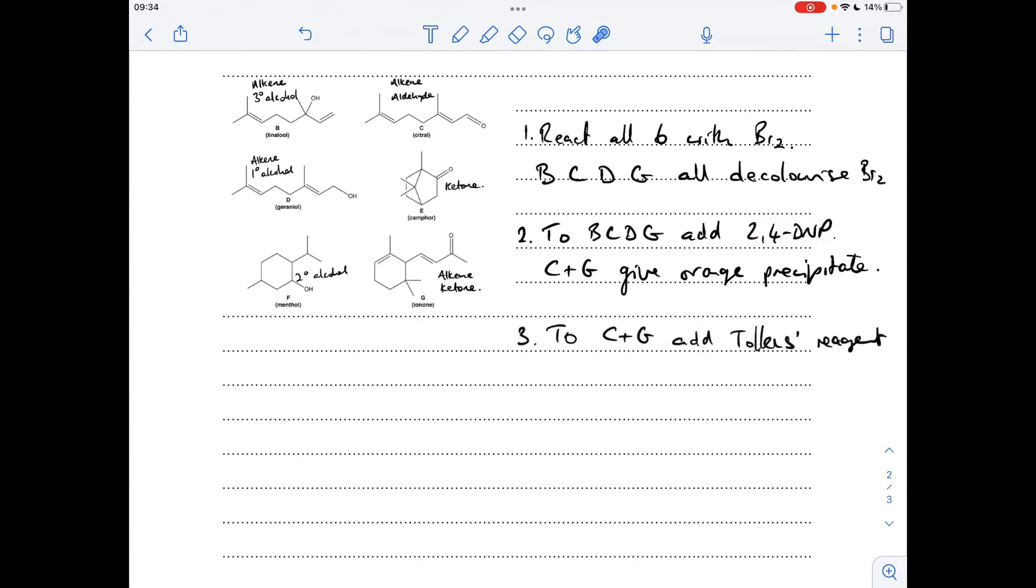The third thing I'm going to do is I'm going to add Tollins reagent to C and G, the two carbonyl compounds. And only compound C will give a silver mirror, because that's an aldehyde. This one won't, because it's a ketone. So C and G are now sorted. So if we go back and do something to B and D now, we're going to identify or distinguish those from each other.